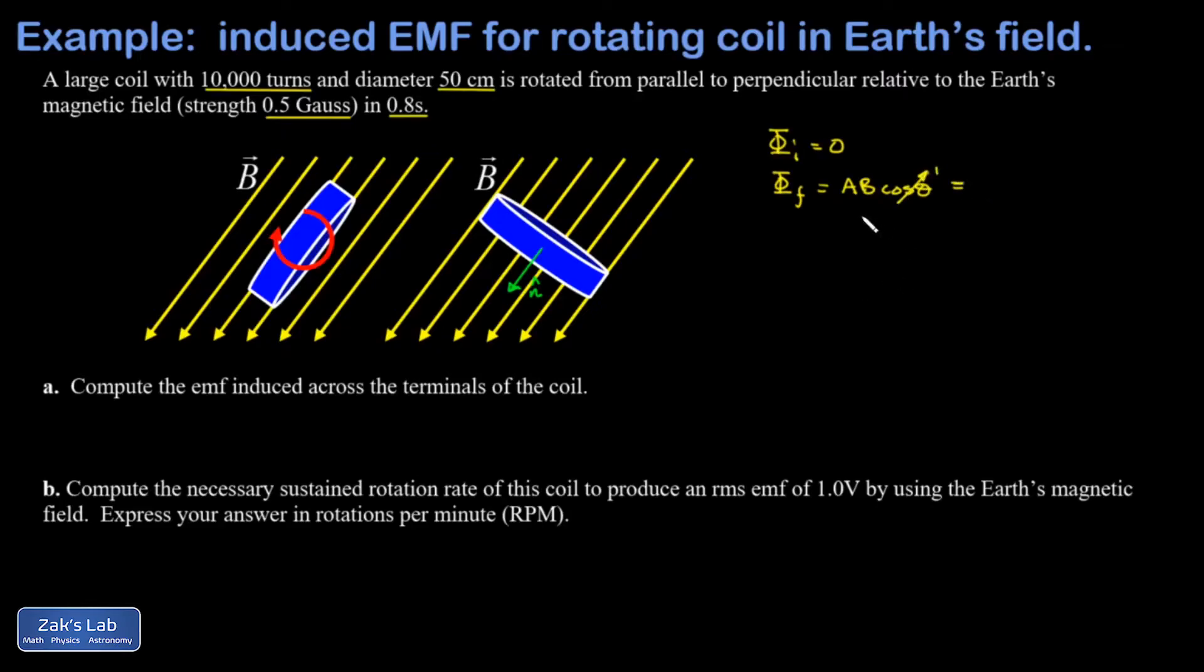I end up with a magnetic flux in the final state—and this is just the flux for one turn of the coil—given by A times B. I need the area of a loop. You can use π r² or you could use one quarter π diameter squared, same thing, times the strength of the magnetic field. I plug in the numbers: that's one quarter π times 0.5² times the strength of the magnetic field.